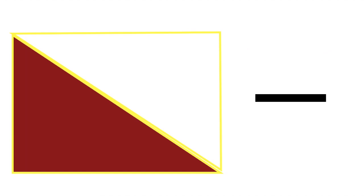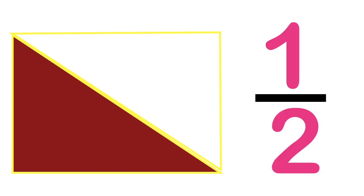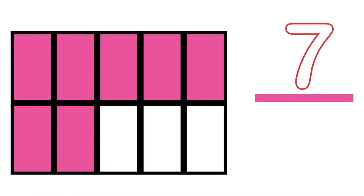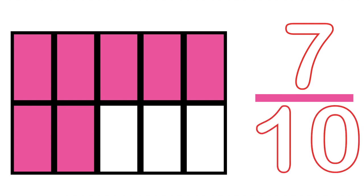How about if we have this illustration? What is the fraction of the shaded part? That's correct, children — we have one half, since we have one shaded part and two equal parts. How about if we have this? What is the numerator? Very good! Our numerator is seven, because we have seven shaded parts. How about the denominator? Fantastic! It's ten, because we have ten equal parts.